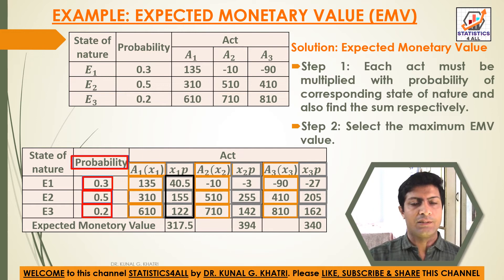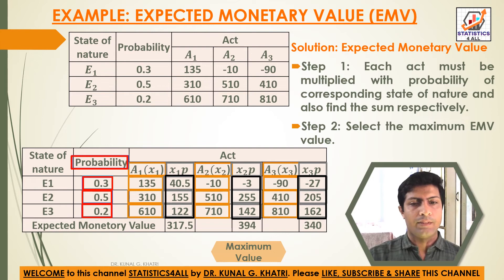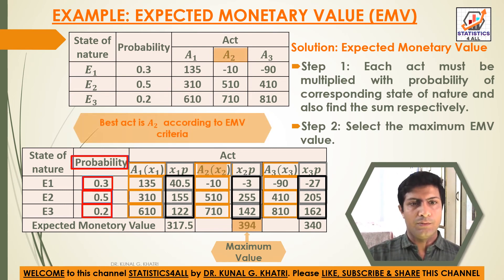Now take the sum for each act. EMV for Act 1: 40.5 + 155 + 122 = 317.5. EMV for Act 2: -3 + 255 + 142 = 394. EMV for Act 3: -27 + 205 + 162 = 340. The maximum value is 394, which belongs to Act 2. So the best act is Act 2 according to EMV criteria.